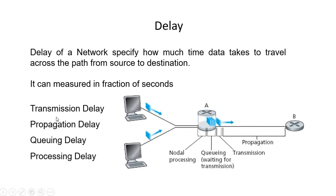There are four types of delay: transmission delay, propagation delay, queuing delay, and processing delay. We will discuss each one by one.